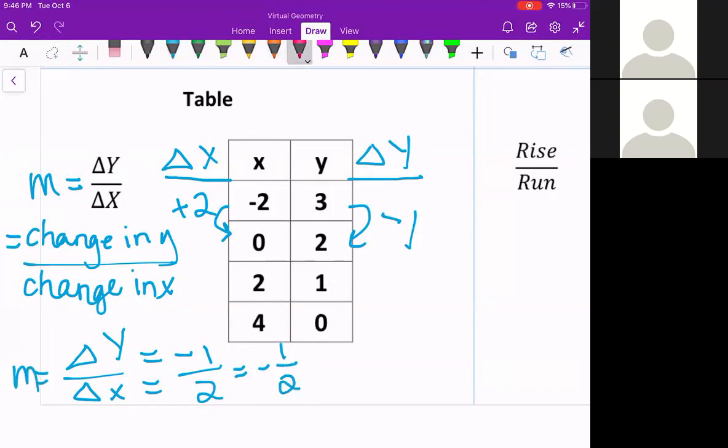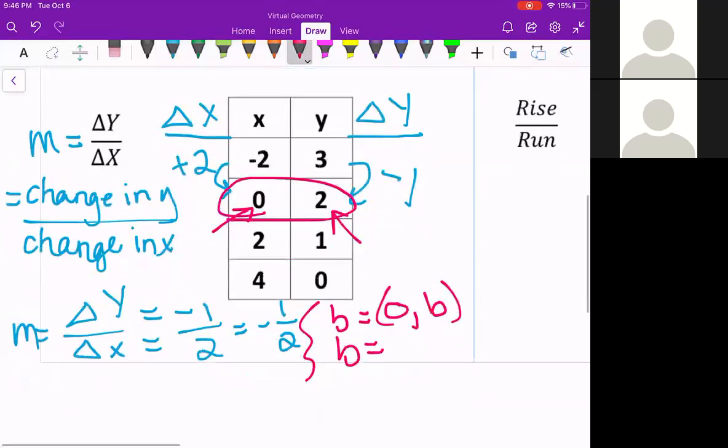Then to look for the b, this is where we're going to want the coordinate (0, b), because we look for 0 in the x. Which means I have (0, 2). So my b is just a 2. Just the 2 in the y column makes up my b.